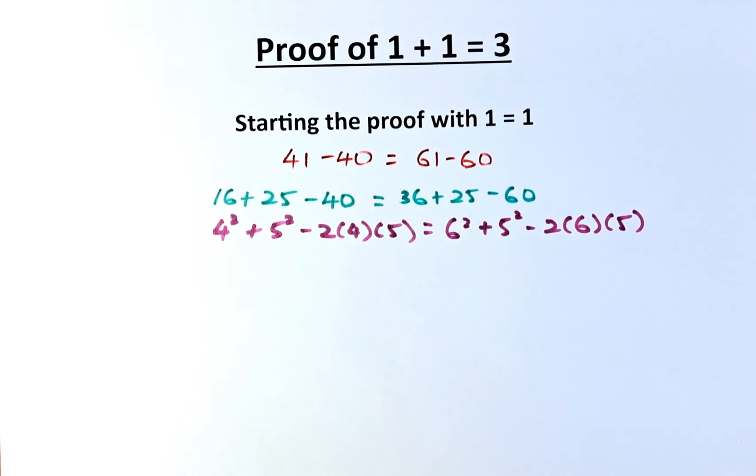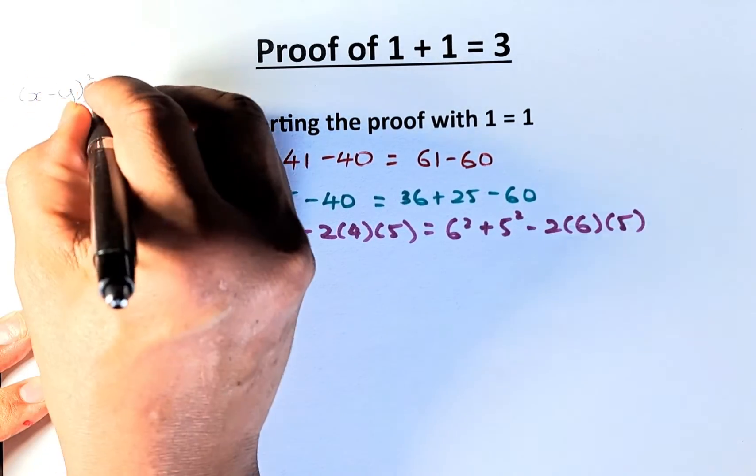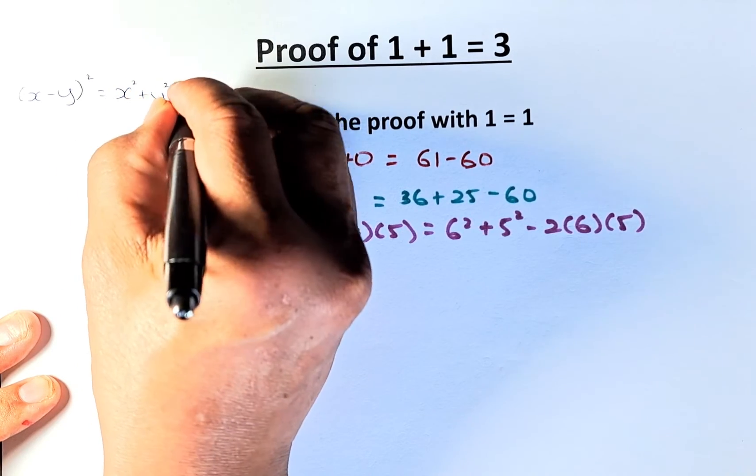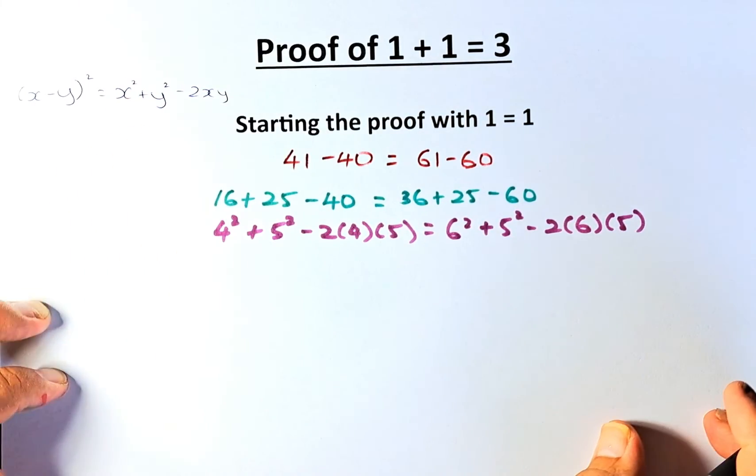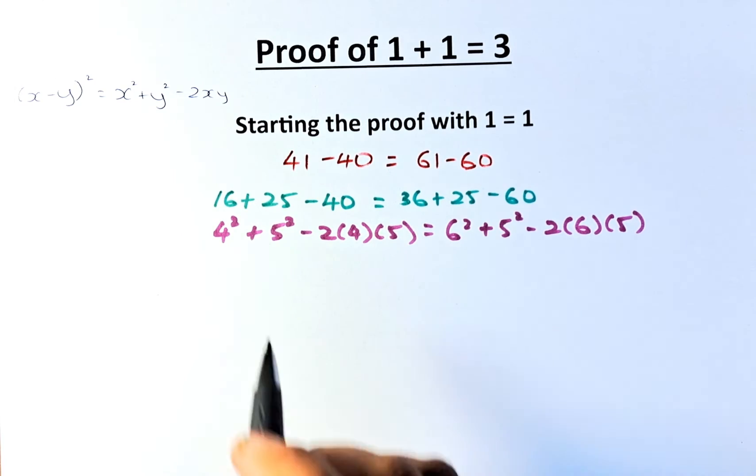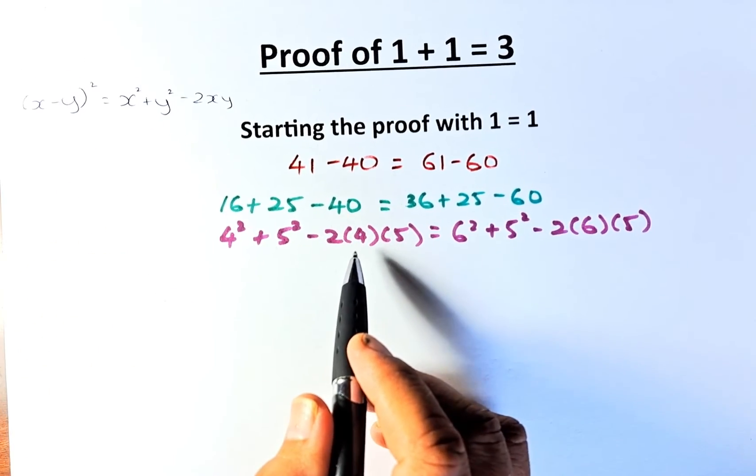Before we proceed, we are going back to algebra class. X minus y squared is the same as x squared plus y squared minus 2xy. This is level 1, level 2 algebra. So that number there is exactly x squared plus y squared minus 2xy.